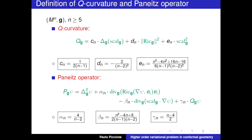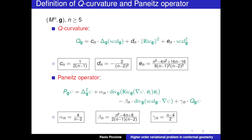This is a tough object to work with. But if you choose an Einstein metric, then the Ricci tensor is a constant multiple of the metric, so its divergence becomes just a Laplacian. If you also take the scalar curvature to be constant, then in the very special case of an Einstein manifold with constant scalar curvature, the Paneitz operator is just a second-order polynomial in the Laplacian.